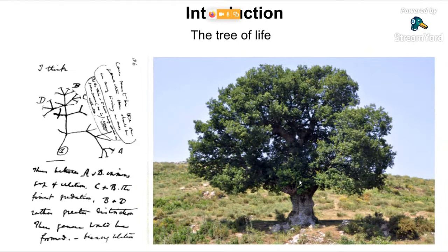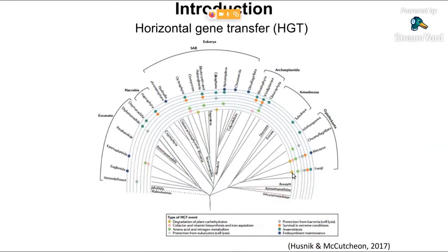This representation has contributed to our understanding of evolutionary processes, but incoming data on massive horizontal gene transfer events within and across life's three domains are showing inconsistencies with the tree of life metaphor. Horizontal gene transfer, or HGT, refers to various processes by which biological individuals can acquire genes coming from outside the germline. This mechanism has been recognized as a driving evolutionary force and allows gene flow between distant evolutionary contexts. It also provides new combinations of sequences that generally confer selective advantages on the host and can survive in the new genome for a long period of time.